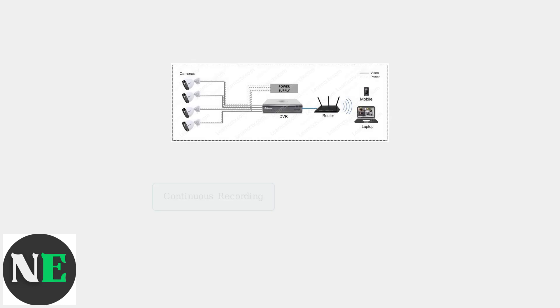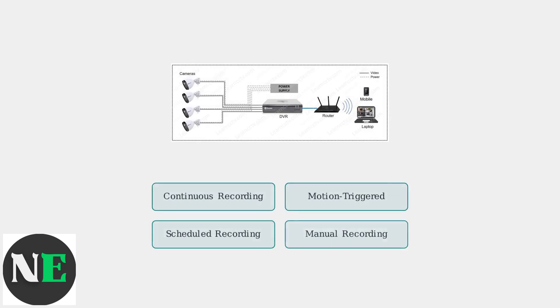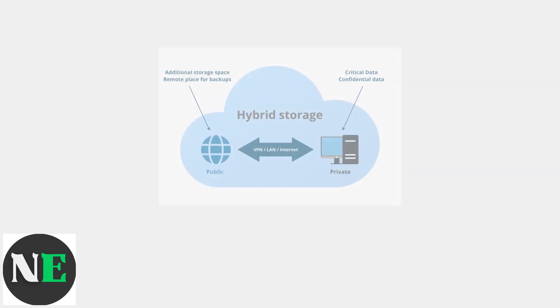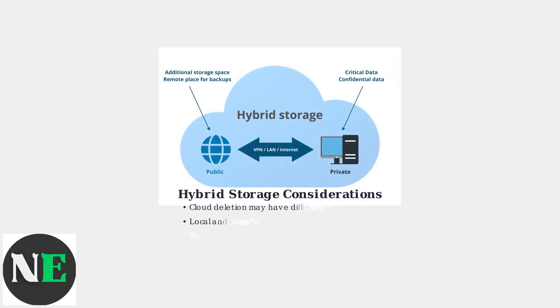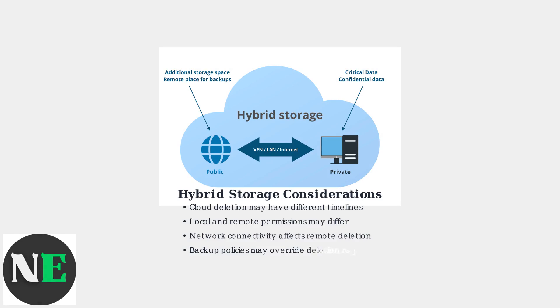Understanding your storage architecture is crucial for effective video deletion. SWAN DVRs support four main recording types, each requiring different deletion strategies. Modern SWAN systems increasingly use hybrid cloud-local storage, which creates complexity as you need different deletion approaches for cloud-stored versus locally stored footage.